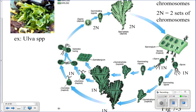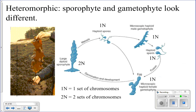In heteromorphic alternation of generations, the gametophyte and sporophyte stages look different. This typically occurs in brown algaes and big kelps — the sporophyte stage is the large, visible kelp, while the gametophyte stage is actually microscopic. The sporophyte can be hundreds of feet long, whereas the gametophyte is tiny.